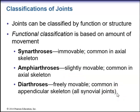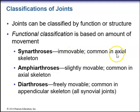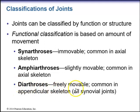Joints can be classified by either function or structure. Functional classification is based on the amount of movement. We have synarthroses, which are immovable joints common in the axial skeleton. Amphiarthroses are slightly movable joints, also common in the axial skeleton. And diarthroses are freely movable and common in the appendicular skeleton — the skeleton of the upper and lower limbs. All synovial joints are diarthroses type joints.